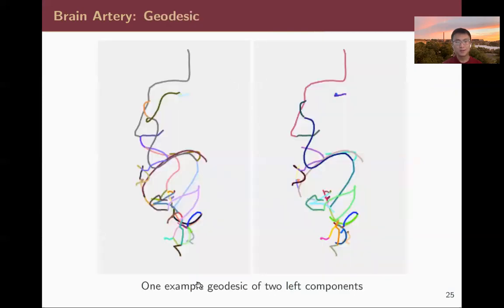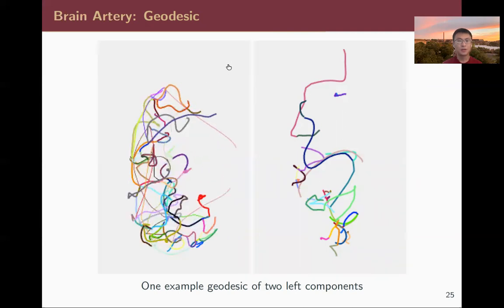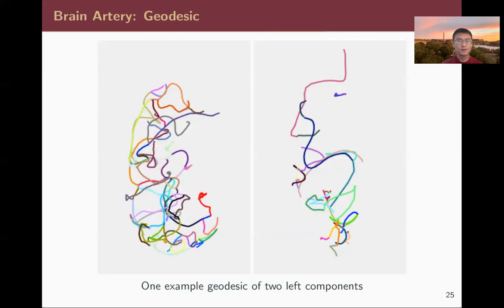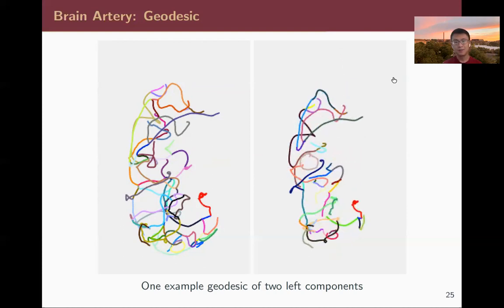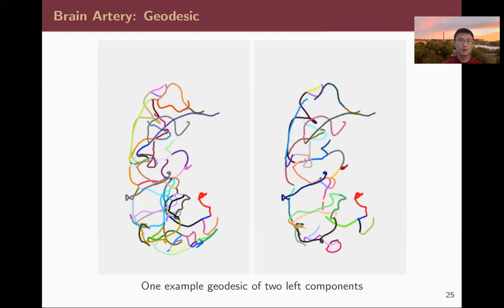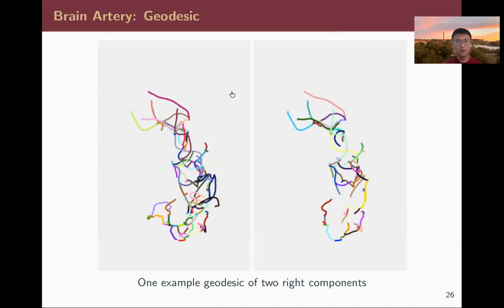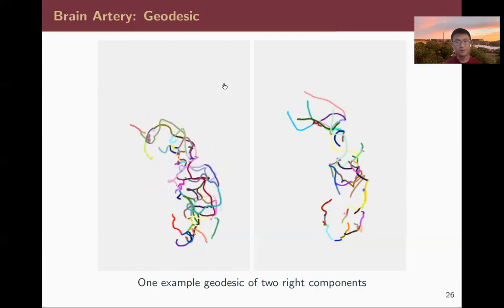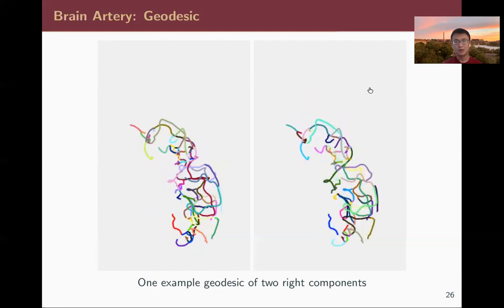We show geodesics for two left components, illustrating how one deforms into another. This is a very complex graph where we can observe edges appearing and disappearing. On the right side, we show the same geodesic but only for matched edges to better understand the internal deformation. We also show a corresponding example for the right component.